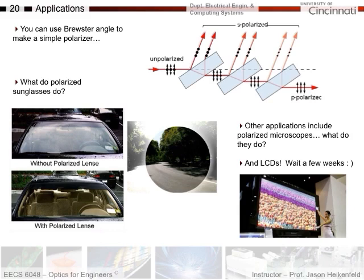The polarized lenses favor P-polarized light, not S-polarized light, because P-polarized light has less Fresnel reflection — not only at the Brewster angle, but for most angles as well. So you get less glare off surfaces.